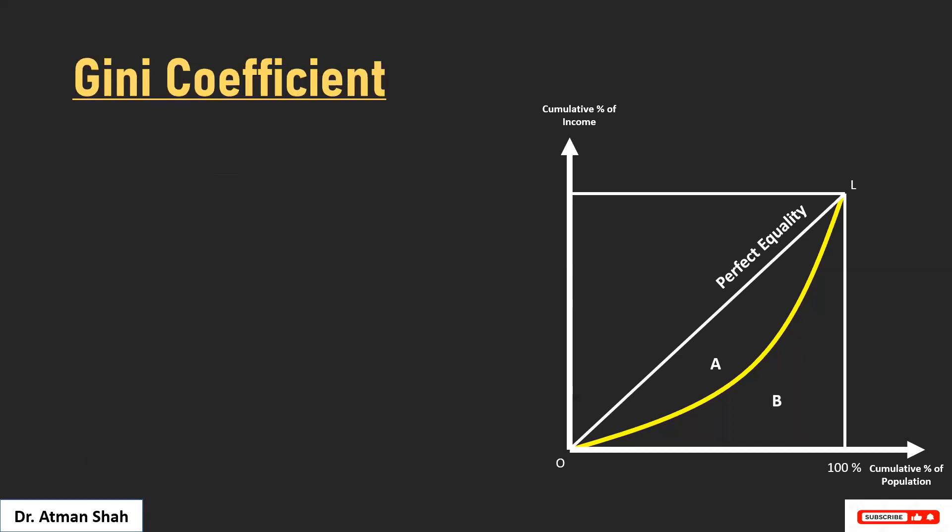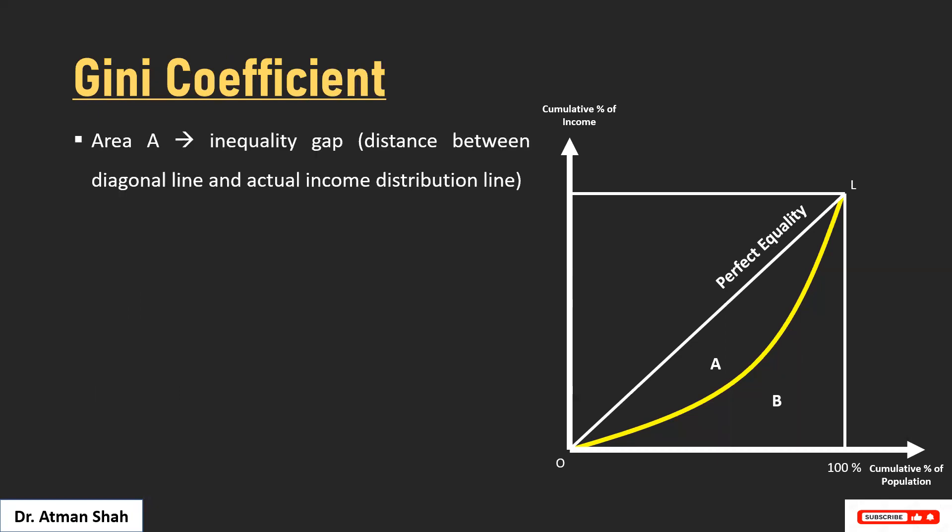So how do we find the Gini coefficient using the Lorenz curve? Area A shows the inequality gap — that is, the distance between the diagonal line and the actual income distribution line.